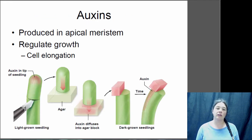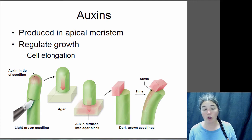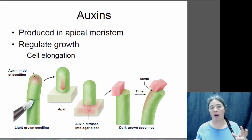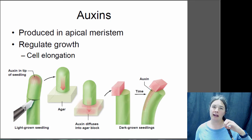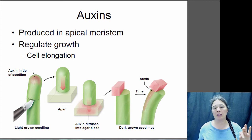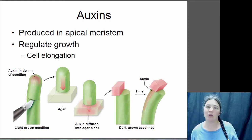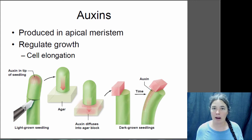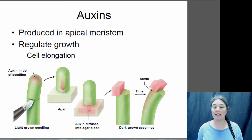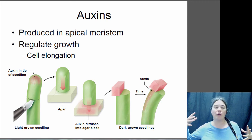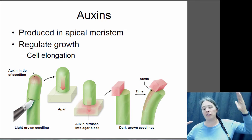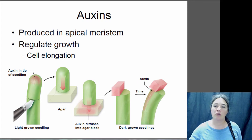Auxins are really important for plant growth. They are produced in the apical meristem among other places, and they regulate growth and in particular cell elongation. If you take the tip of a shoot, cut it off, and put it on agar, you can absorb the auxins from the shoot tip. If you then put that auxin-containing agar on one side of a stem, the cells exposed to auxin elongate more than those that aren't. This looks just like phototropism and gravitropism - and in fact auxin controls that bending. When the plant receives light from one side, it produces auxin on the opposite side, causing the stem to grow toward the light.